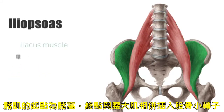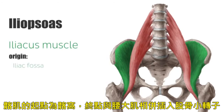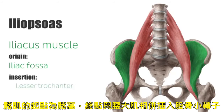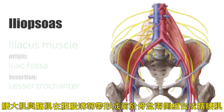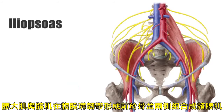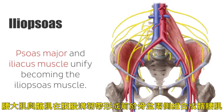The iliacus muscle originates from the iliac fossa and inserts with the psoas major at the lesser trochanter. The psoas major and the iliacus muscle unify in the lateral pelvis shortly before the inguinal ligament, becoming the iliopsoas muscle.